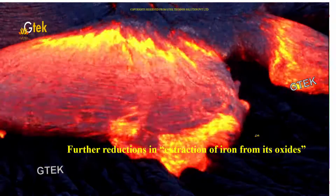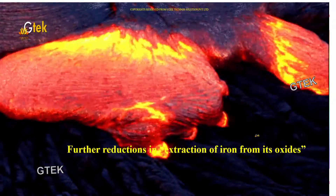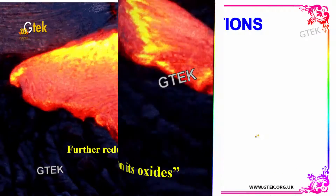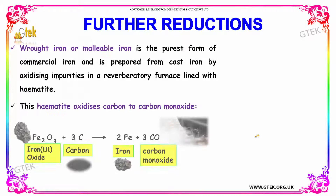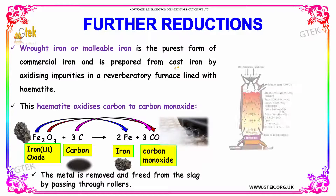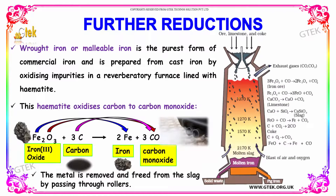Wrought iron or malleable iron is the purest form of commercial iron and is produced from cast iron by oxidizing the impurities in a reverberatory furnace lined with hematite.